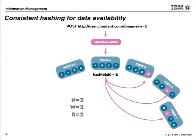We have consistent hashing, but we also need data redundancy — we need to guarantee that your data will be there. We do that with a quorum model. The quorum here has n equals 3, w equals 2, r equals 2. So I'm going to have n copies of my data. When I do a write, I want to hear back from two of those nodes. When I do a read to return that result, I want to hear back from two of those nodes. This is a good way to make sure you get a very fast response without hearing from every node.